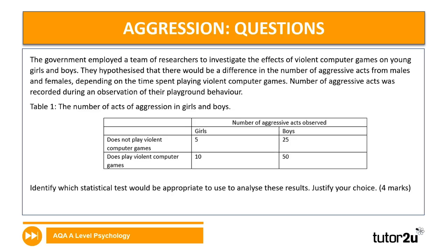Further aggression questions with a table of findings: the government employed researchers to investigate effects of violent computer games on young girls and boys. They hypothesised a difference in aggressive acts between males and females depending on time spent playing violent computer games. The number of aggressive acts was recorded during observation of playground behaviour. You are asked to identify which statistical test would be appropriate to analyse these results and justify your choice — four marks. Consider data type, design (repeated, independent, or matched measures), and whether it tests a difference or a correlation. Allow approximately five minutes.